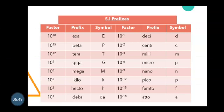There are many prefixes. For multipliers greater than one: 10^18 is called exa (symbol: E); 10^15 is peta (symbol: P); 10^12 is tera (symbol: T); 10^9 is giga (symbol: G); 10^6 is mega (symbol: M); 10^3 is kilo.